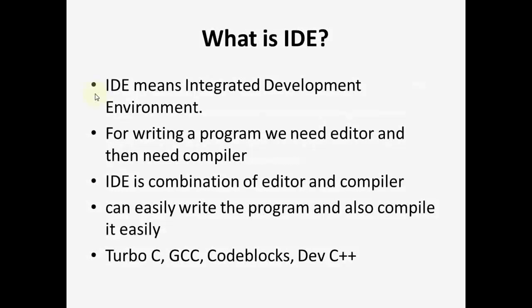What is an IDE? IDE stands for Integrated Development Environment. For writing a program we need an editor, and then we need a compiler to convert our program into machine language. So we can say that an IDE is a combination of editor and compiler both. Using an IDE we can easily write our program and then compile it at the same time. There are many IDEs and compilers available — some examples are Turbo C, GCC, Code Blocks, and Dev C++. You can use any one of them. I have added a link in the video description from where you can easily download these compilers and IDEs.